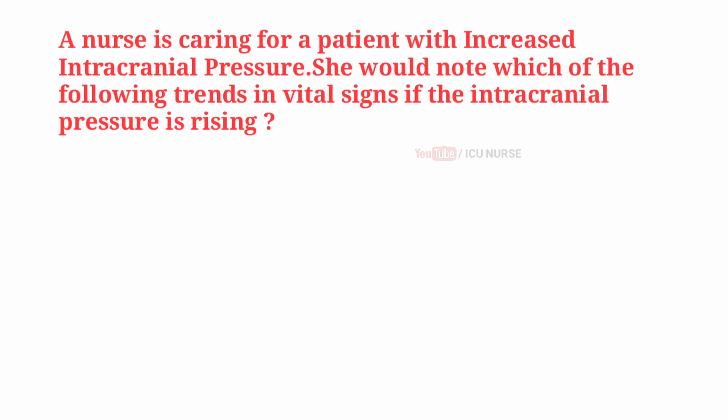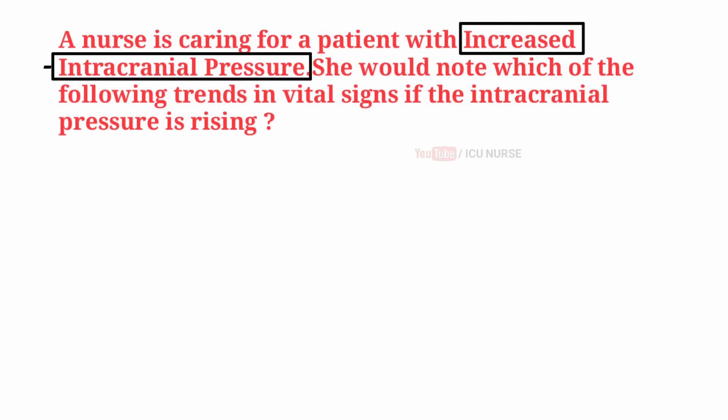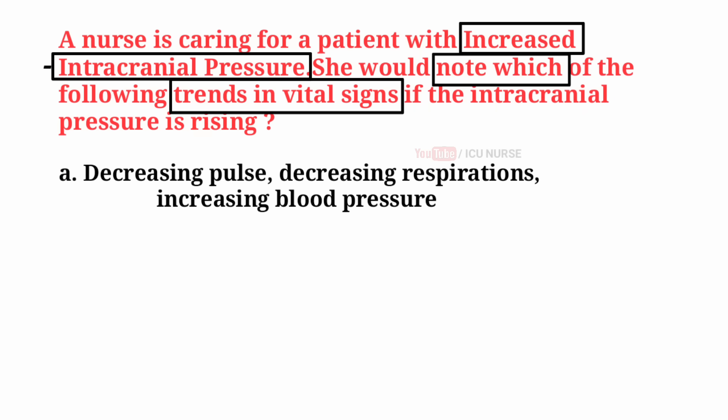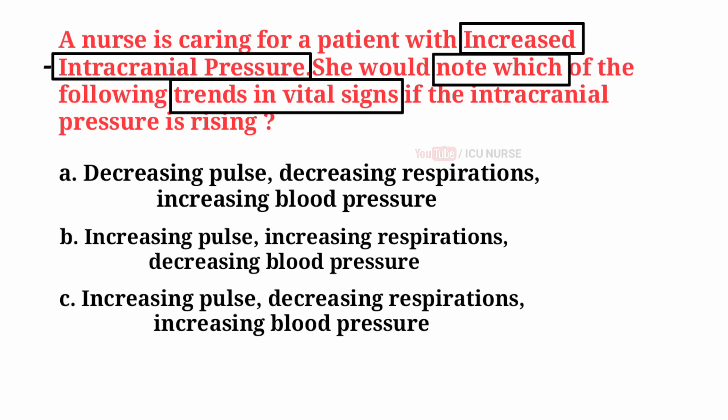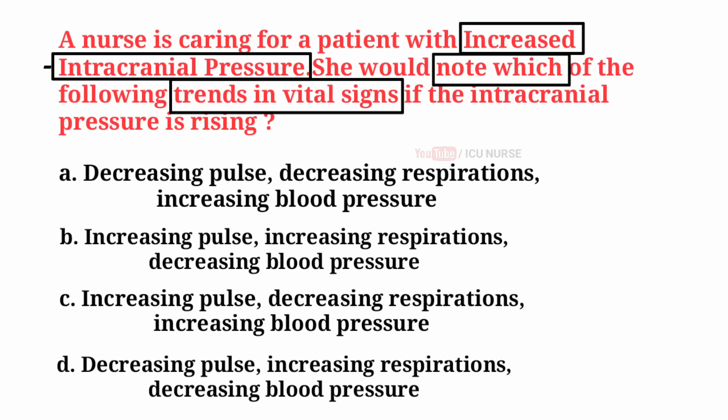A nurse is caring for a patient with increased intracranial pressure. She would note which of the following trends in vital signs if the intracranial pressure is rising? A. Decreasing pulse, decreasing respirations, and increasing blood pressure. B. Increasing pulse, increasing respirations, and decreasing blood pressure. C. Increasing pulse, decreasing respirations, and increasing blood pressure. D. Decreasing pulse, increasing respirations, and decreasing blood pressure. And the correct answer is...